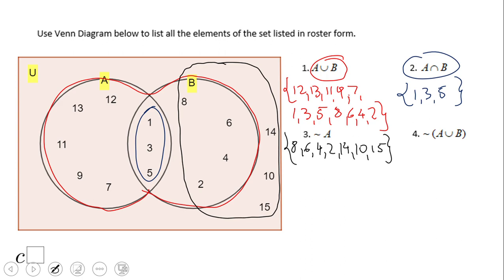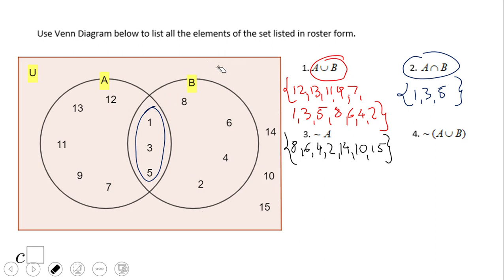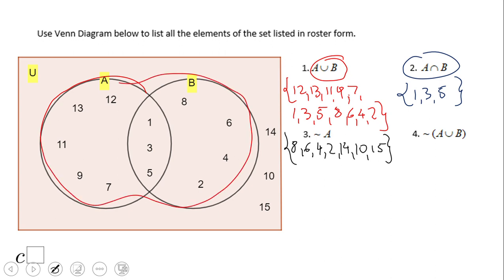Then here we have the complement of the union. I'm going to go back to red — let me erase some stuff here. So the complement of the union: remember the union is this whole region. The complement will be the elements outside it. So it's going to be 14, 10, and 15.